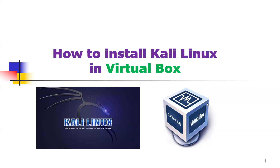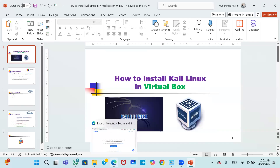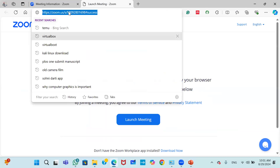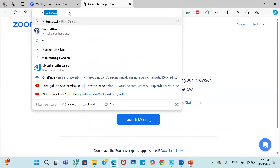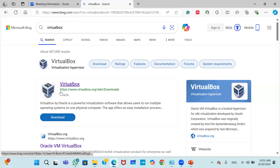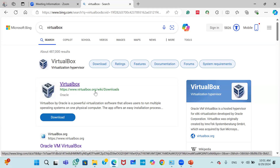To install Kali Linux on VirtualBox, first we need to download Oracle VirtualBox. Open your favorite browser and search for VirtualBox. You will see the official VirtualBox.org website.